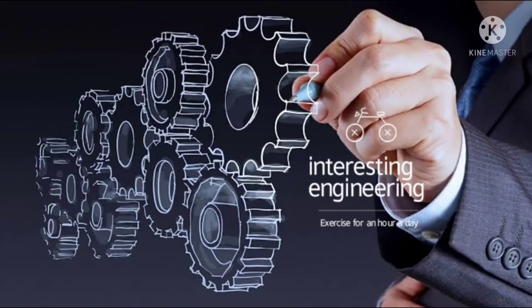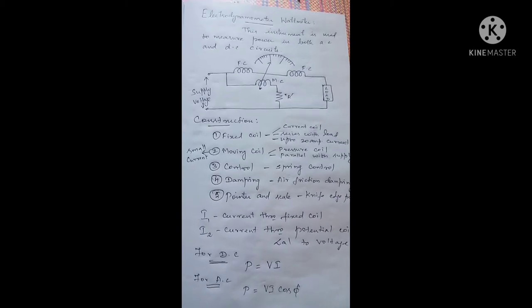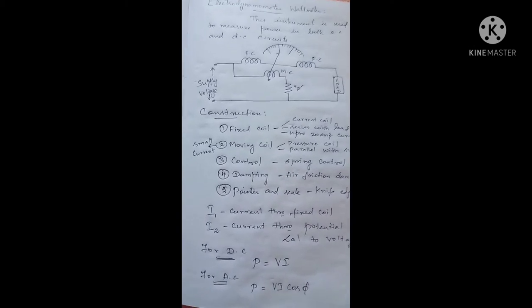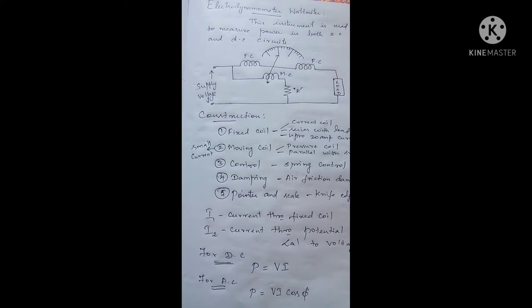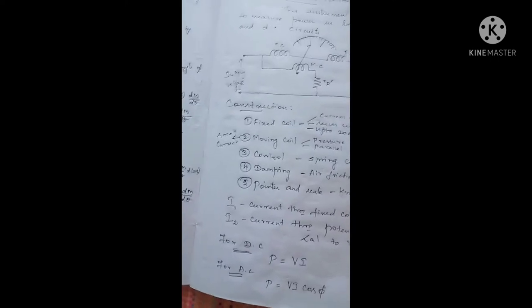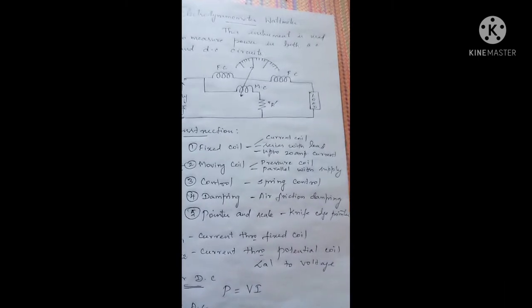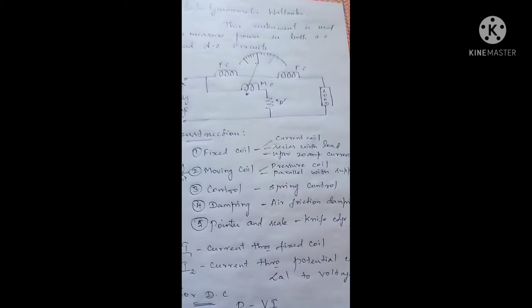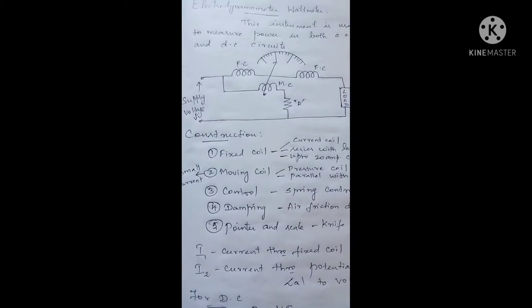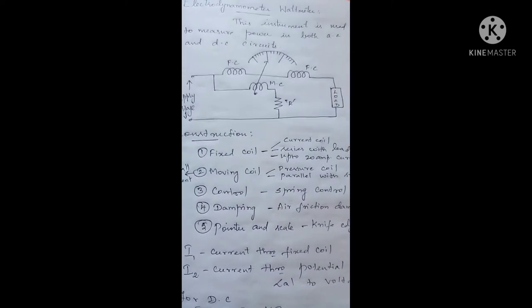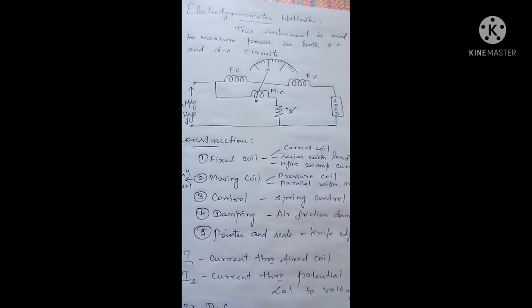Hi friends, welcome to my channel Interesting Engineering. Today we are going to discuss about the electrodynamometer type wattmeter. In our previous video we already discussed about electrodynamometer type instruments. A wattmeter is an instrument meant for measuring the power developed in both AC as well as DC circuits.